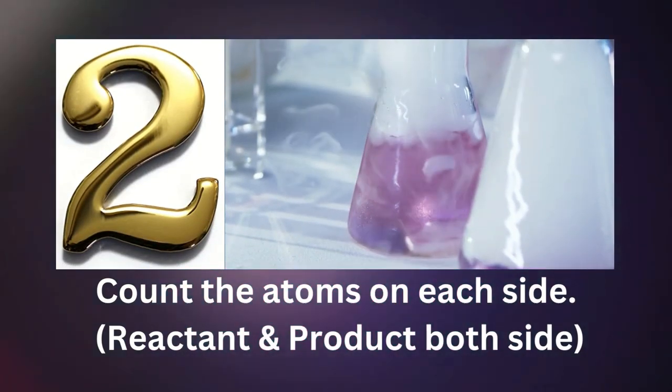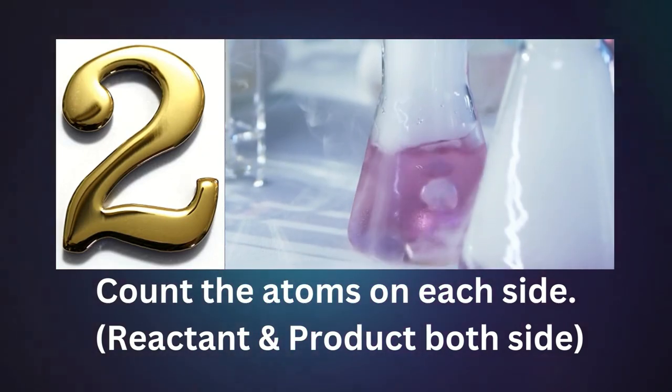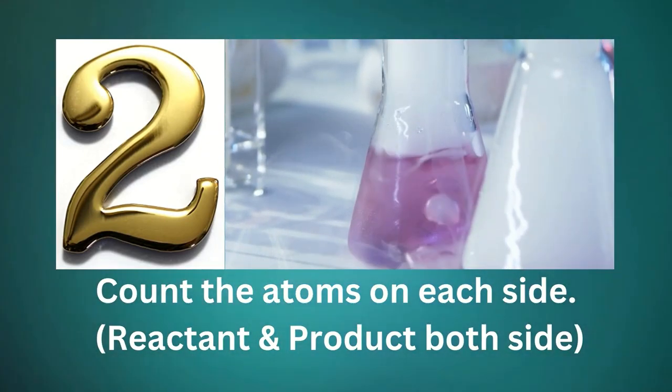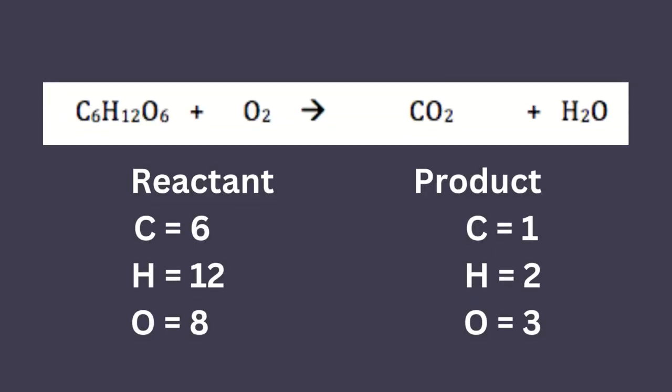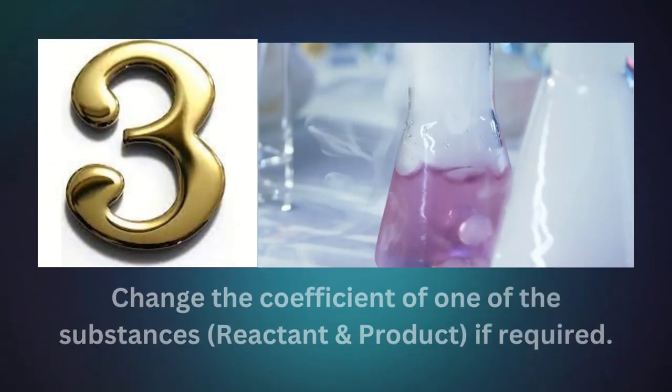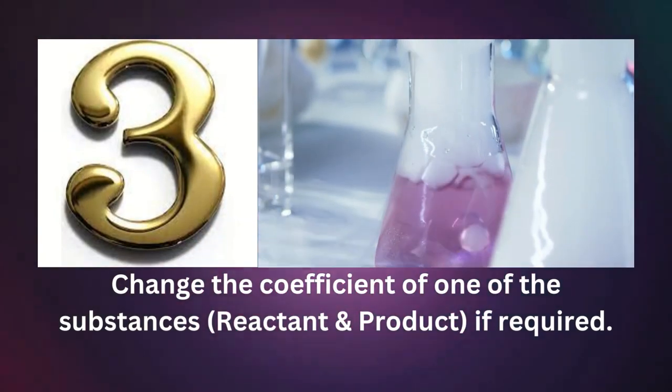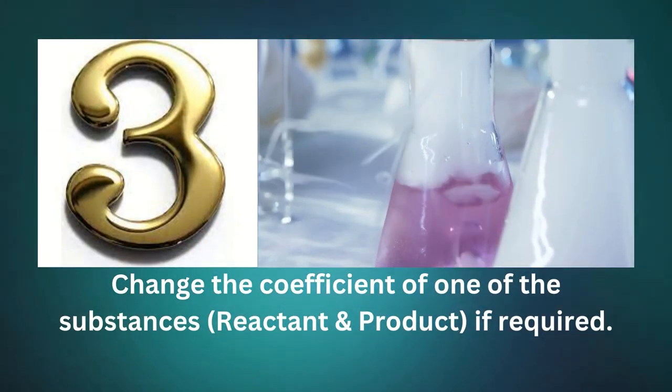Step number two. Now count each element in reactant and product. Reactant: carbon equals six, hydrogen equals twelve, oxygen equals eight. Product: carbon equals one, hydrogen equals two, oxygen equals three.